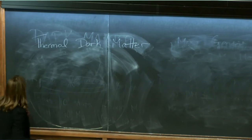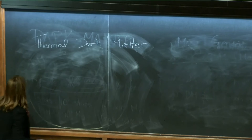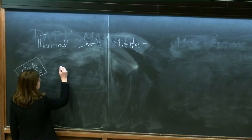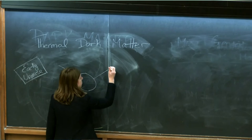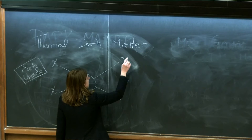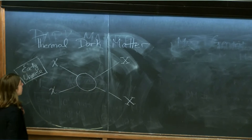So in the early universe, we're going to say that the dark matter can interact with standard model particles. I'm going to label my dark matter with a chi, and I'll label my standard model particles with x's. I'm going to remain reasonably model independent about just how these interactions occur, so I'm going to denote that with a blob.